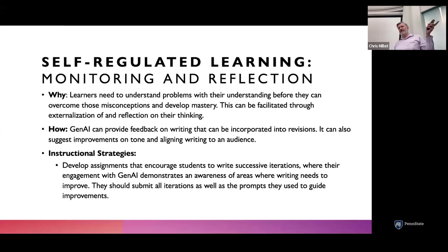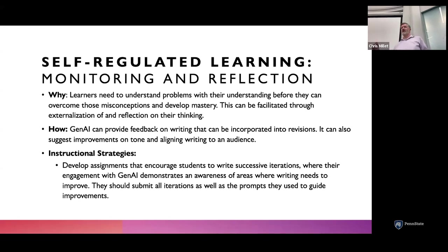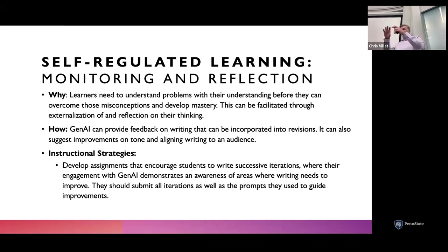Self-regulated learning: monitoring and reflection, developing metacognitive skills, is really essential for students. In order to learn, you need to understand where your misconceptions are and overcome them — and part of doing that is monitoring your thinking through reflection and externalizing your thinking so it's almost like an object in front of you that you can look at and say 'this is where my thinking is at right now; clearly I don't understand this part.' Through iteration with AI you can overcome those bits of misconception. Because this is just you and AI — as opposed to a group setting where students might be embarrassed about their lack of understanding — you can be super honest about what parts you don't understand and chip away at those things through a back-and-forth conversation.